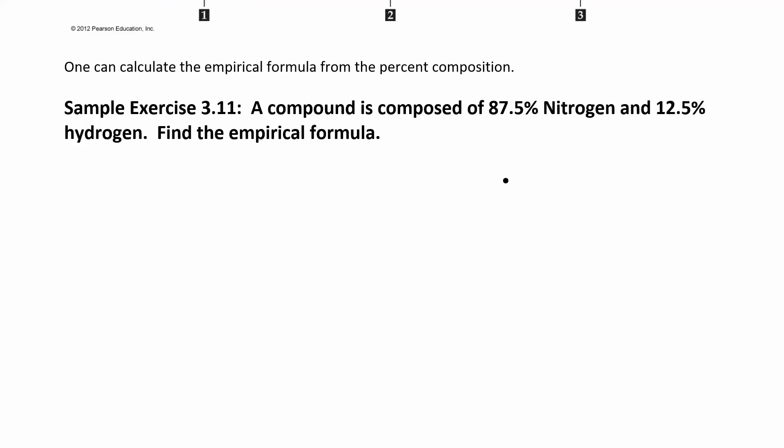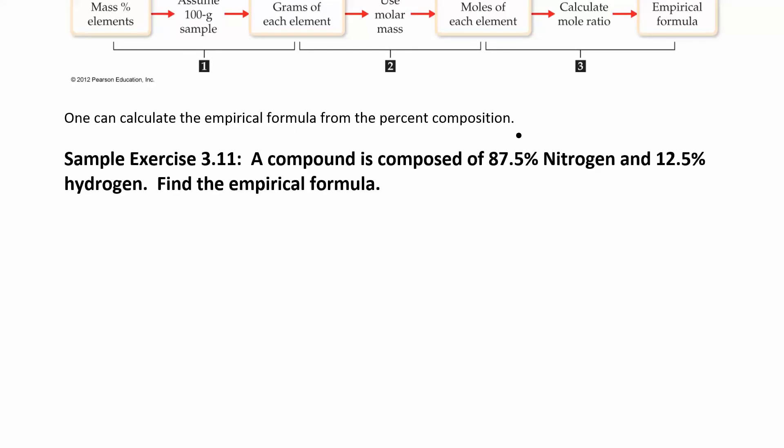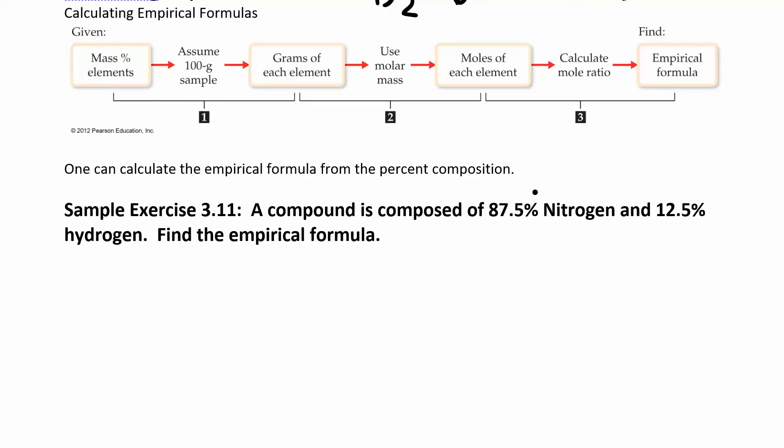So we have a compound composed of 87.5% nitrogen and 12.5% hydrogen. Find the empirical formula. Whenever you see these percents and they say something about empirical formula, you're going to do the same process. Mass percent, they're given those. Assume you have 100 gram sample. If I have 100 gram total in my sample and 87.5% of it is due to nitrogen, that means I have 87.5 grams of nitrogen. Now you're probably more comfortable in the gram world than you are in percent world. And the rest of that, 12.5 grams, is going to be hydrogen.